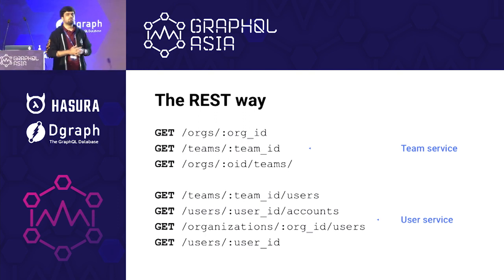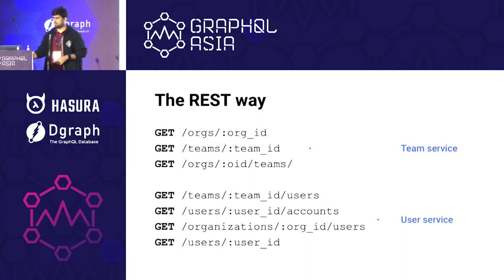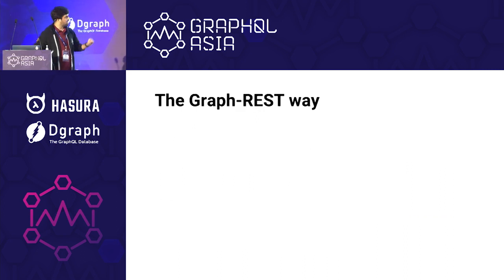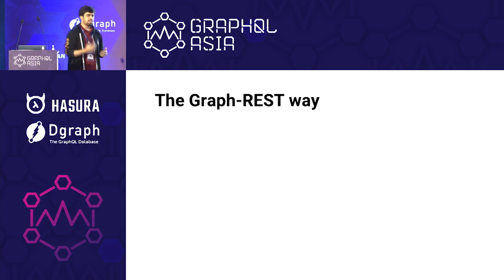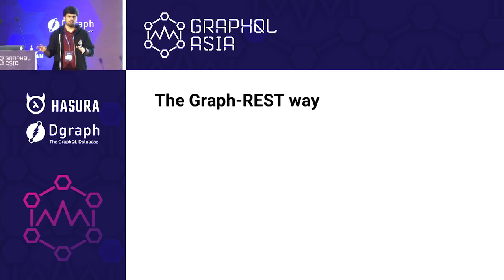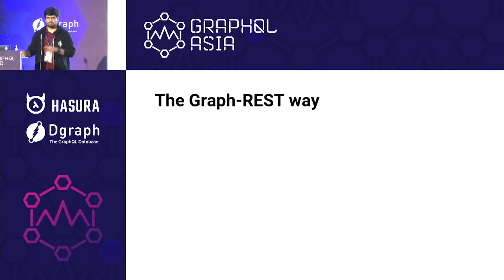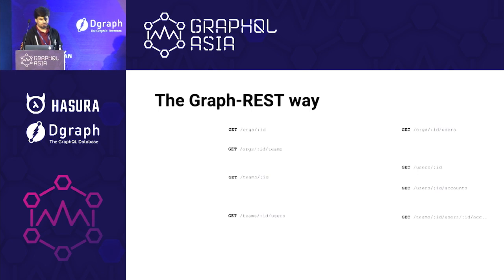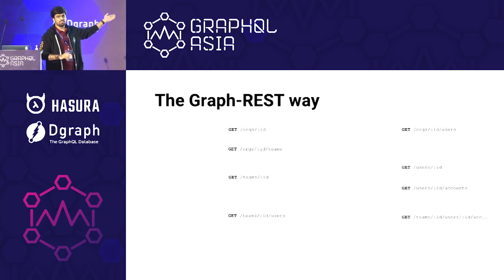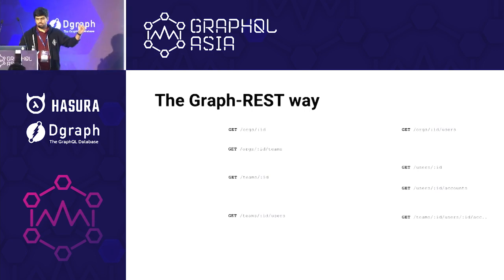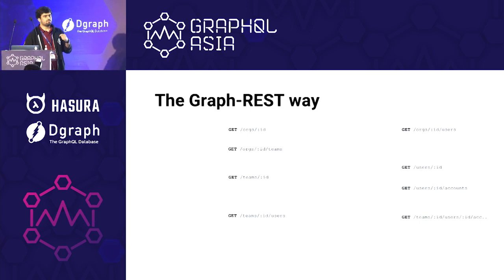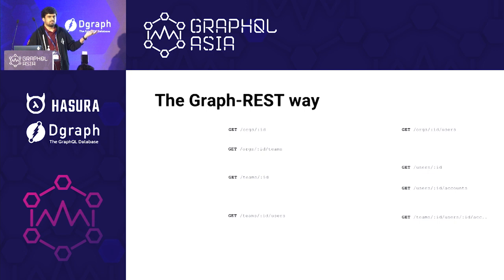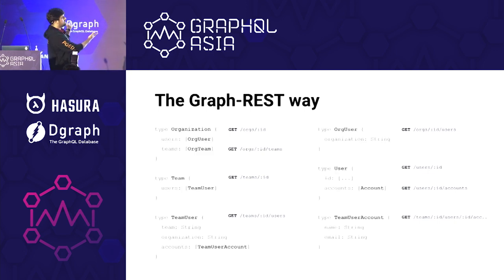The first thing most of us end up building is what I call not really a GraphQL schema — it's not really REST, not really Graph, somewhere in the middle. These existing endpoints bias and influence us to build a schema which just embodies them. And we end up building a schema that looks like this.